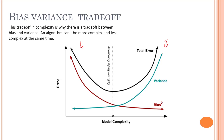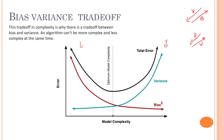This trade-off in complexity is why there is a trade-off between bias and variance — an algorithm can't be more complex and less complex at the same time. Looking at this graph, if you try to decrease variance, the bias increases, and if you try to decrease the bias, the variance increases. So there's a trade-off, and we need a point which lies just in the center — that is the optimum model complexity — having just the right variance and just the right bias.